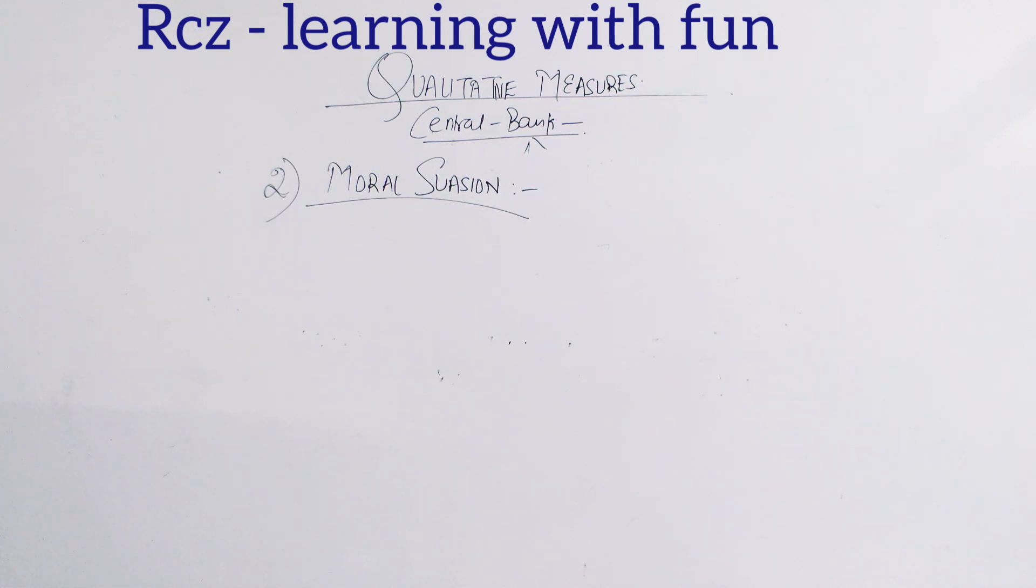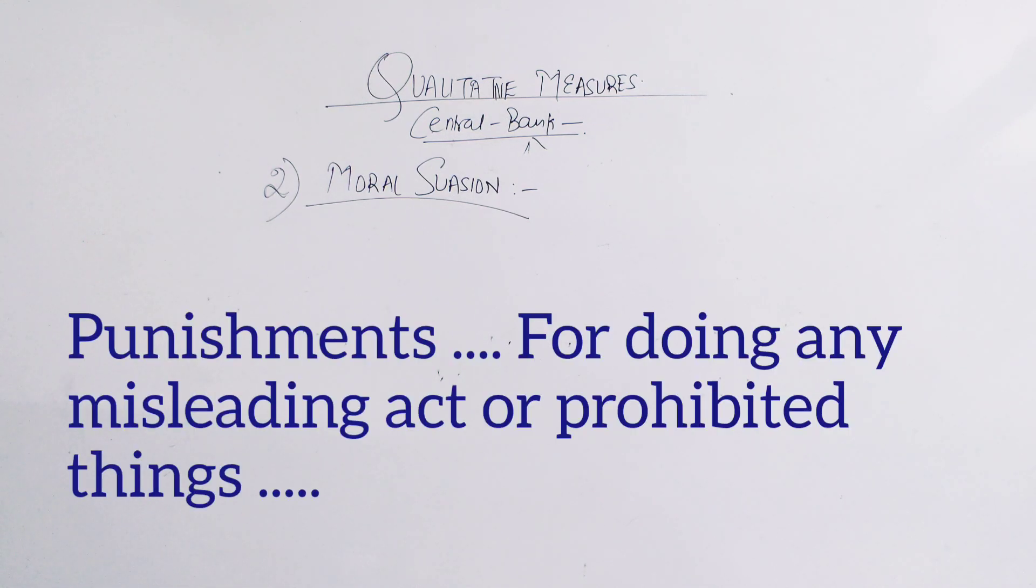So being a central bank, they also expect results from commercial banks. They want banks to increase money supply in the market, increase GDP, provide low investment opportunities, invest in the economy. So those banks, central bank motivates them, pressures them through meetings, punishments for wrongful acts, they can jail them, they can do anything.